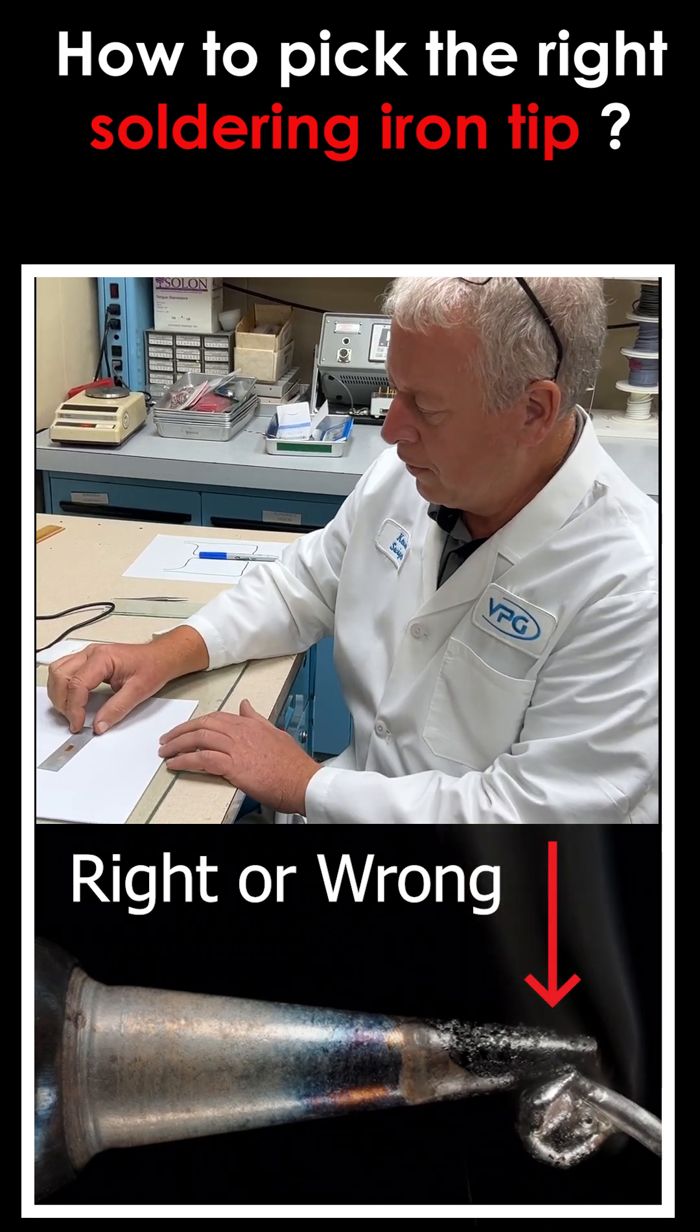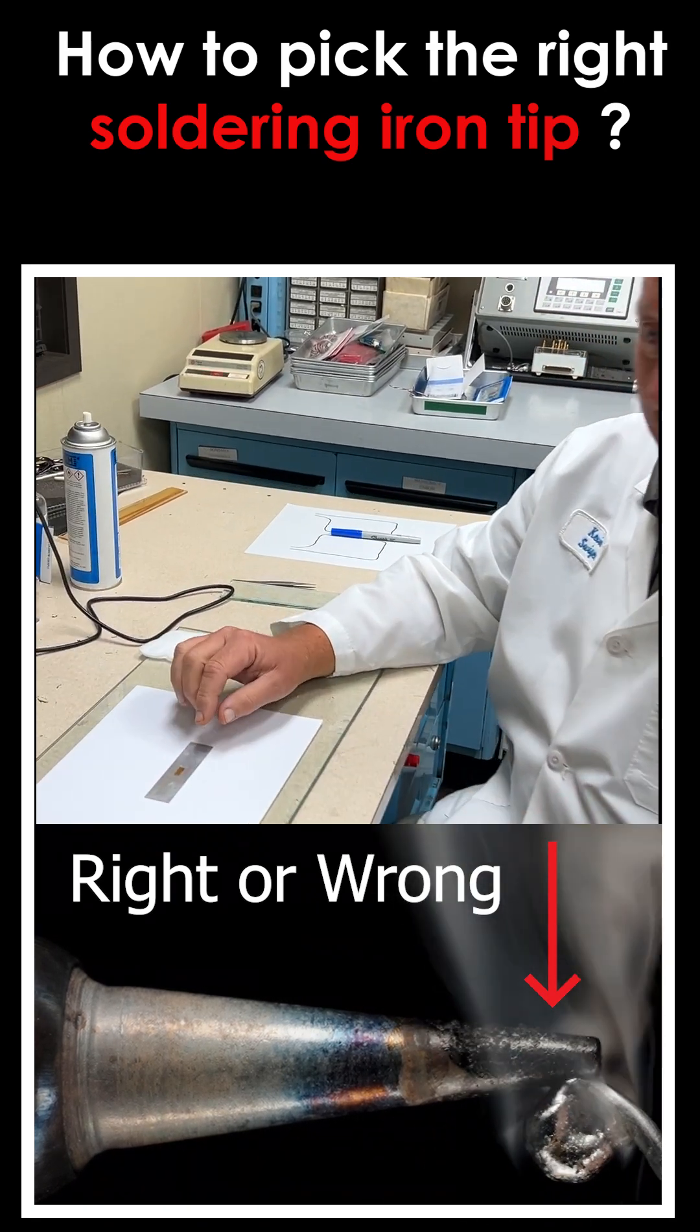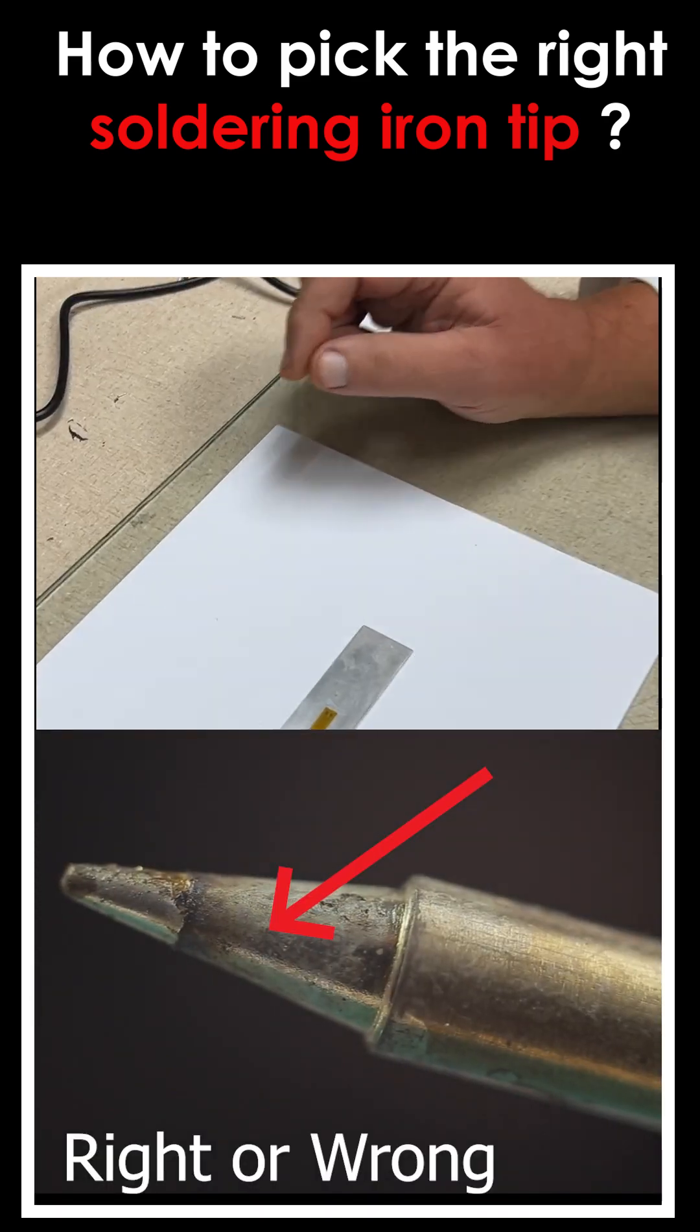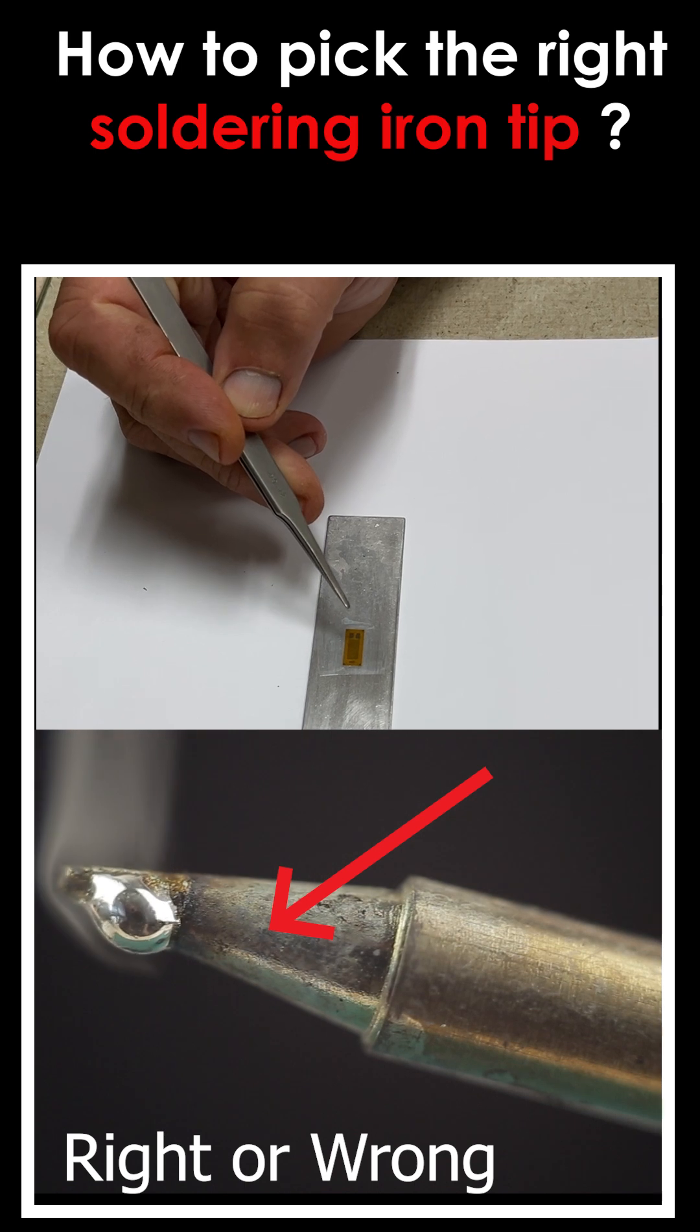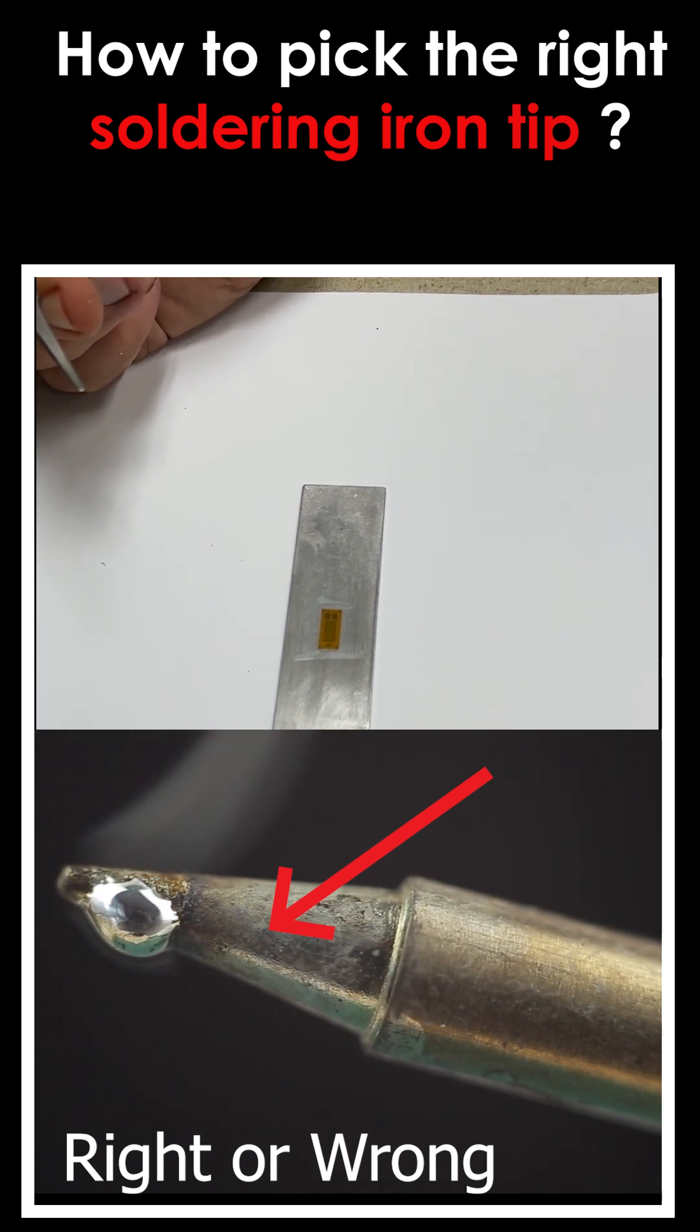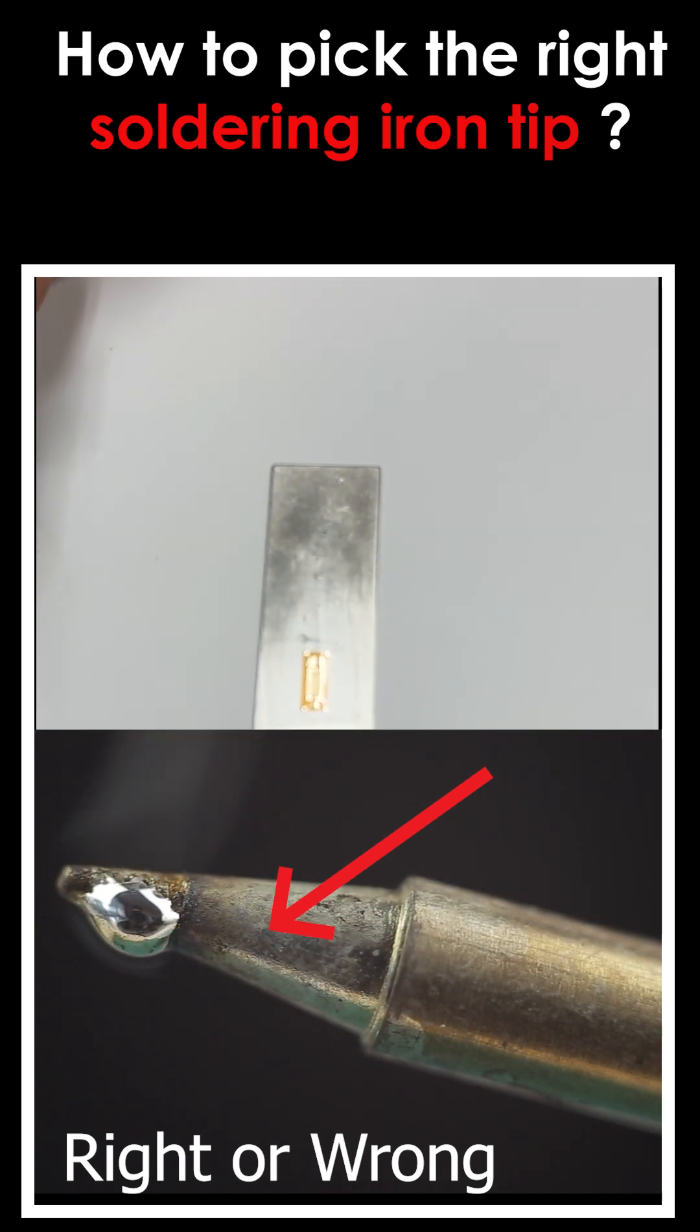And so what I've got here is a strain gauge that Quinn has bonded. Get a close-up of that. Now, this is an open-faced strain gauge, and the foil here is about roughly 200 micro inches thick, so 200 millionths of an inch.